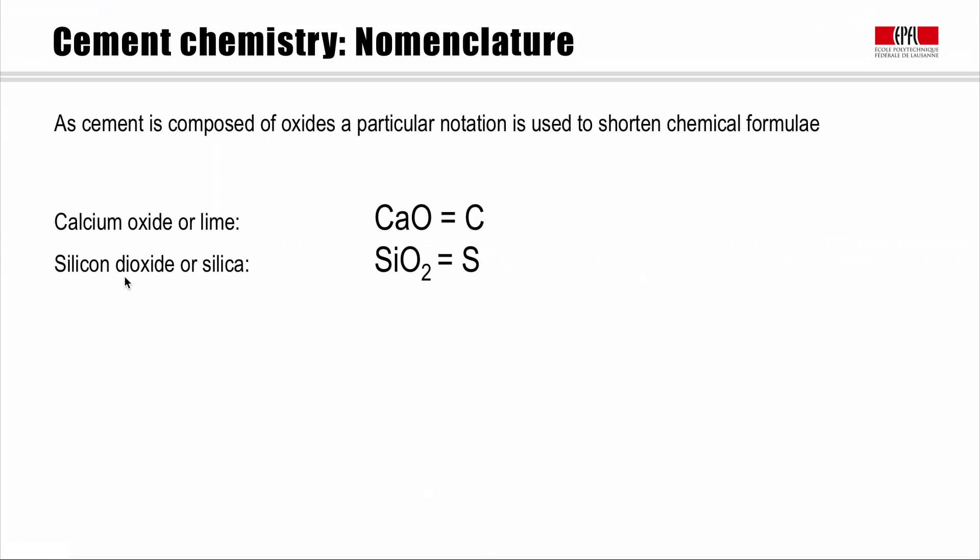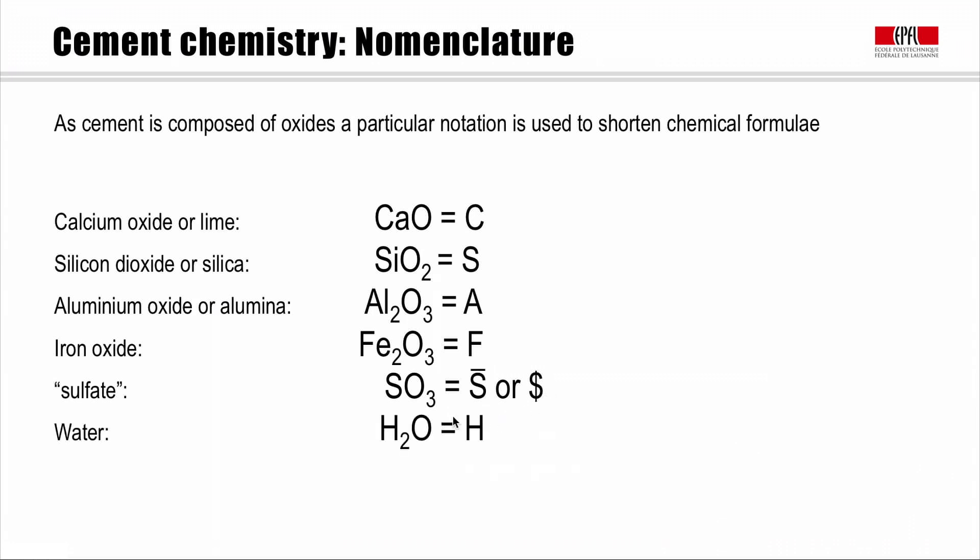Similarly, silicon dioxide or silica, which is SiO2 in the full notation, becomes S. Aluminum oxide or alumina, Al2O3, becomes A. Iron oxide becomes F. Sulfate becomes S bar or S dollar or dollar sign. And water becomes H.